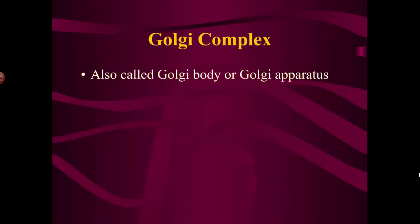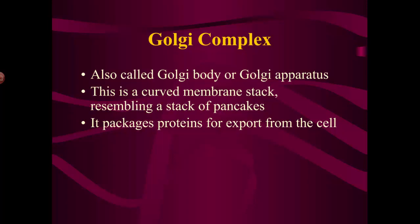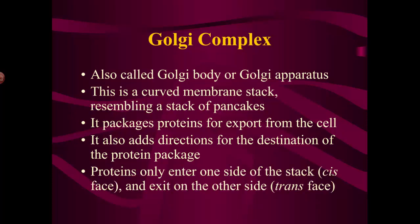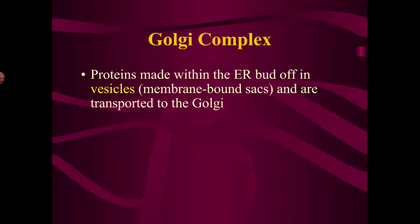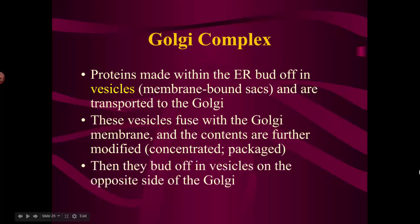The Golgi complex — also called the Golgi body or Golgi apparatus — looks like a stack of pancakes. Its job is to package proteins so they can get out of the cell. Some cells, like liver cells, make lots of proteins that need to be released — for example, enzymes dumped into the blood to help detoxify it. The Golgi complex also adds directions so the proteins know where to go. It's a one-way factory: proteins enter through the cis face and come out the trans face. Proteins made in the endoplasmic reticulum come off surrounded by membrane in little sacs called vesicles, are transported to the Golgi body, fuse with the cis face, dump their contents inside where they're modified and packaged, then come out the other side again bound in vesicles.